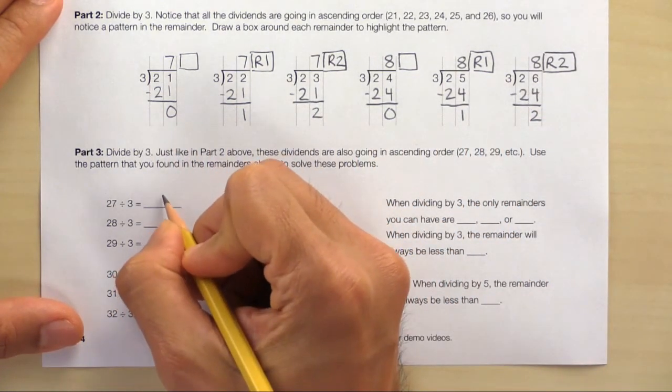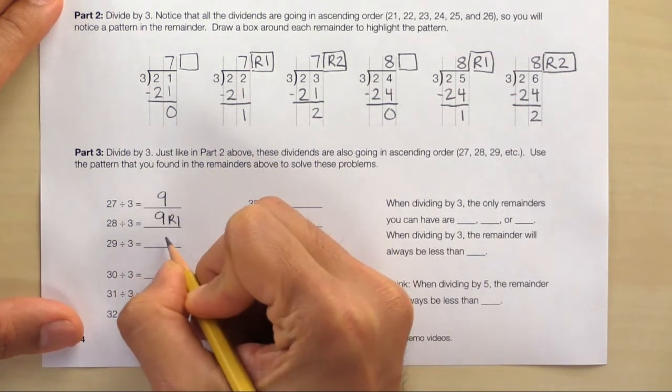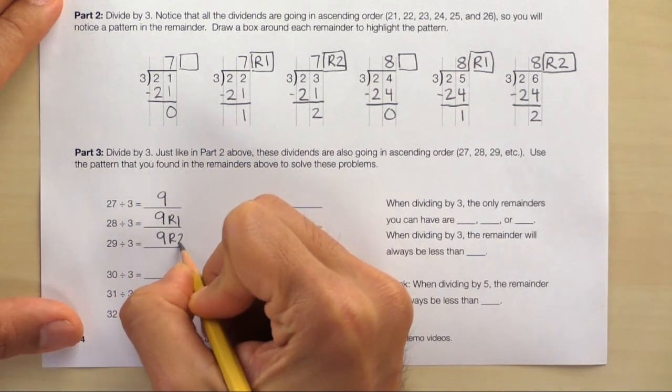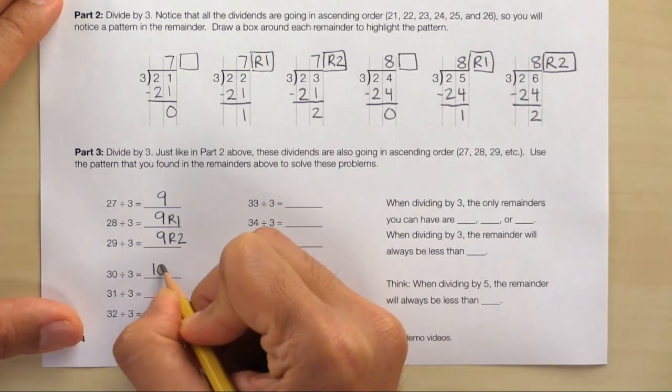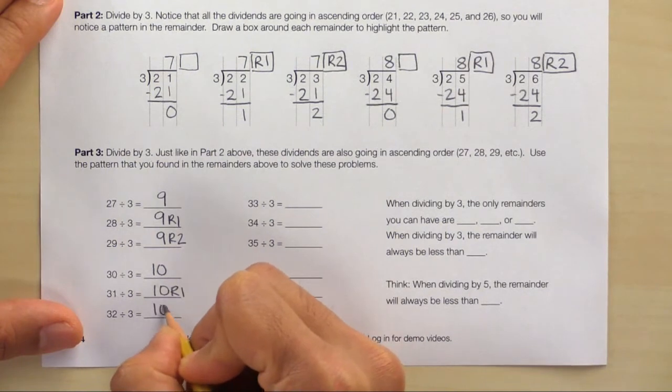The quotients here are 9, 9 remainder 1, 9 remainder 2, 10, 10 remainder 1, and 10 remainder 2.